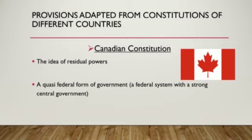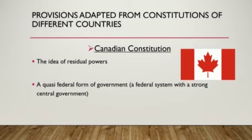Residual power is the power retained by the government after powers were distributed to other authorities. Any area not covered in the Constitution is considered to be the country's power to make laws and is called residual powers. The Indian Constitution has four parts for making laws: first, the Union List — only the union government can make laws; second, the State List — state government can make laws; third, the Concurrent List — both state and central government can make laws; and fourth, the Residual List.